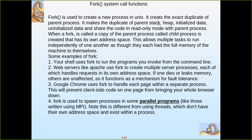Fork makes a duplicate of the parent stack. If any stack is used in the parent, that will be duplicated — including initial data and the shared code, which is in read-only mode. Those code sections will also be shared by the child process. An exact duplicate is formed, but the address spaces are different. When fork is called, a child process is created that has its own address space.